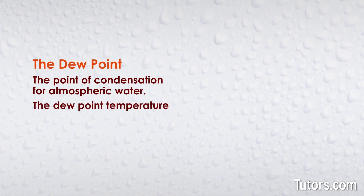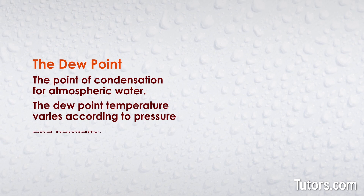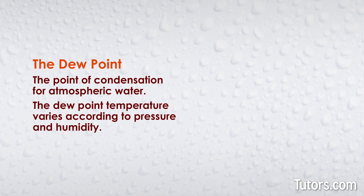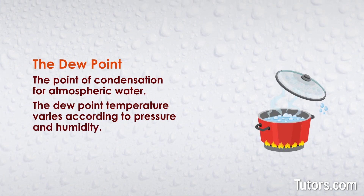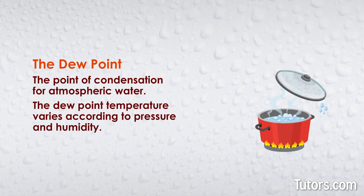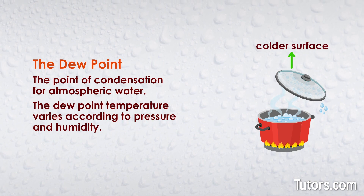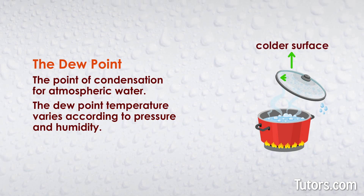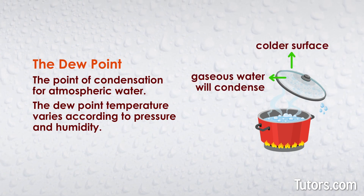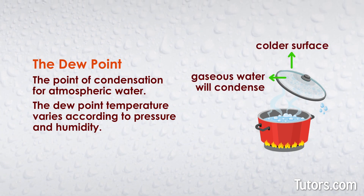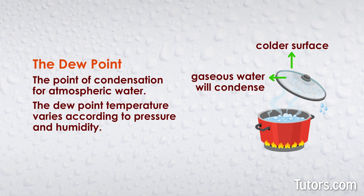The dew point temperature varies according to pressure and humidity. When warm air full of water vapor cools to its dew point by contacting a colder surface, the gaseous water will condense, causing water to form on the surface of the object.